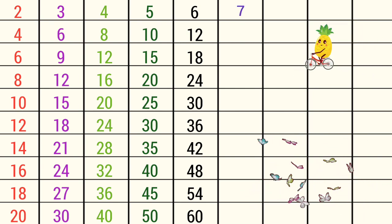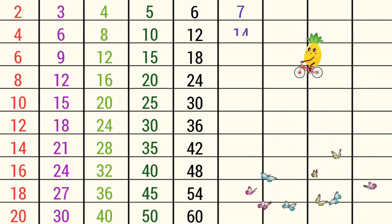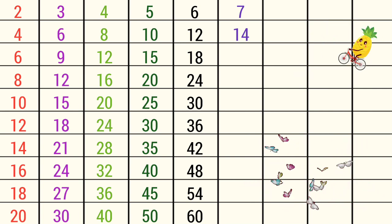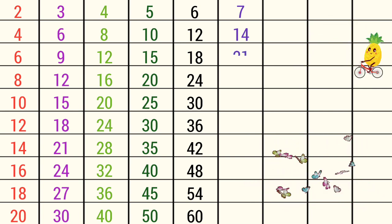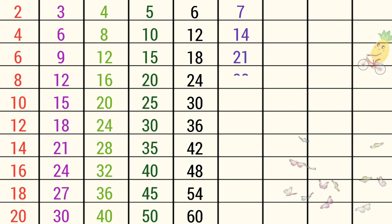7 ones are 7, 7 twos are 14, 7 threes are 21, 7 fours are 28, 7 fives are 35, 7 sixes are 42.